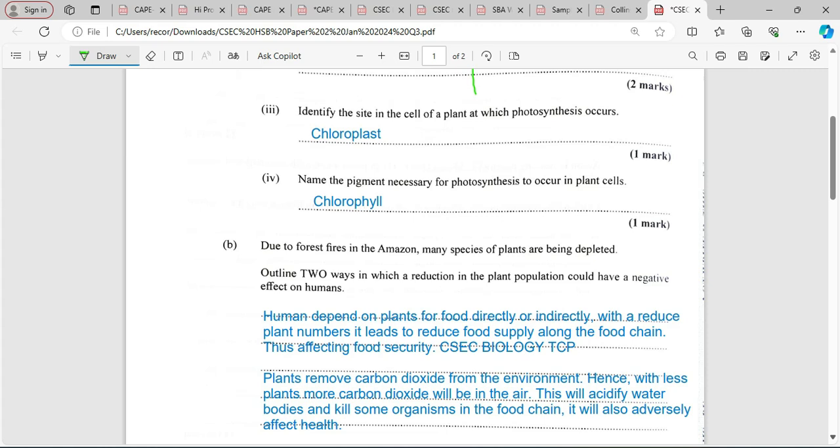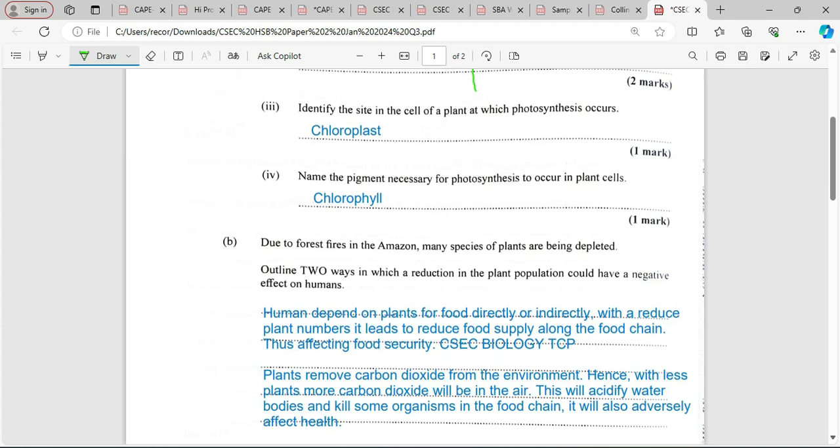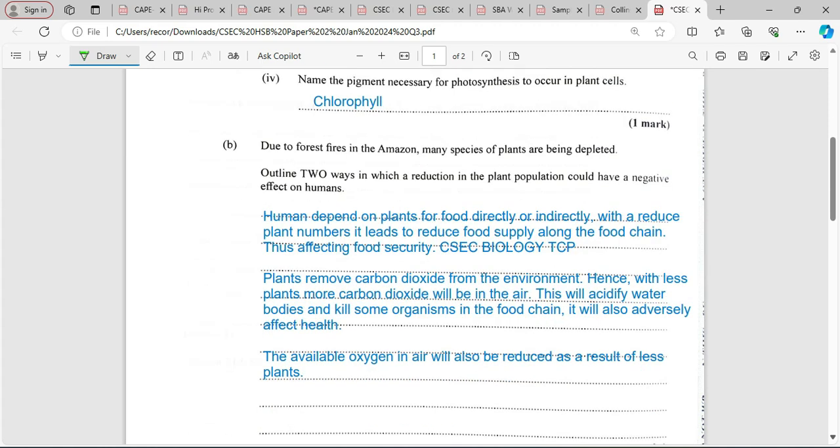It will also have adverse effects on health of animals and possibly humans. If the environment becomes acidified, you're going to have red eyes, itchy watery eyes, and so on. When it's too acidic, it causes lesions on aquatic animals. The availability of oxygen in the air will also be reduced as a result of less plants. We need to make sure that if we're removing plants, we are replacing them.